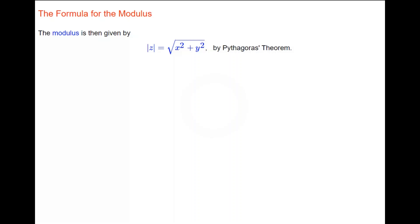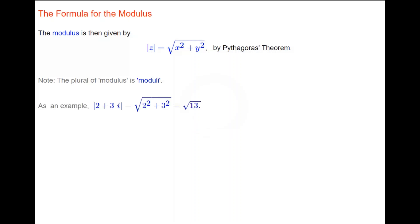The modulus is given by the formula: the modulus of Z is the square root of X squared plus Y squared, given by Pythagoras' theorem. So the modulus of Z is the square root of the sum of the squares of the real part and the imaginary part. The plural of modulus is moduli. As an example, the modulus of the complex number 2 plus 3i is the square root of 2 squared plus 3 squared, which is the square root of 13.